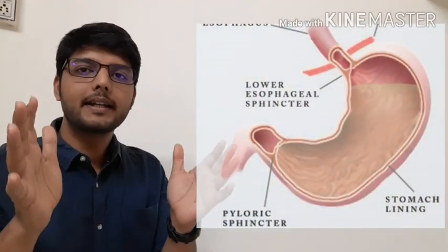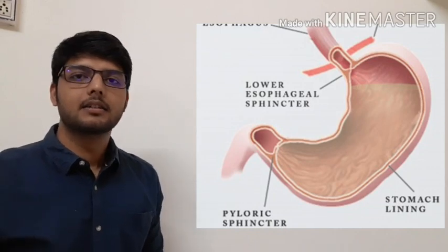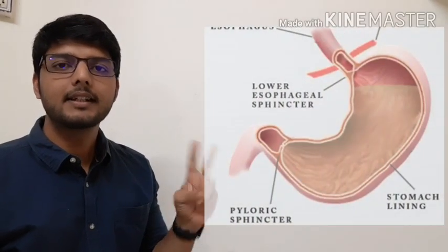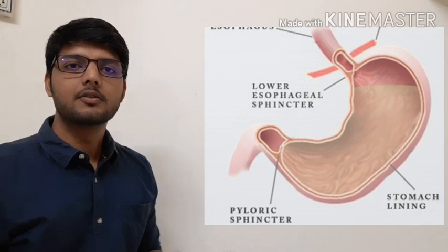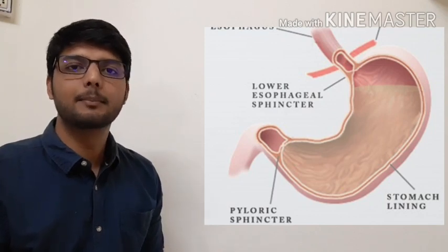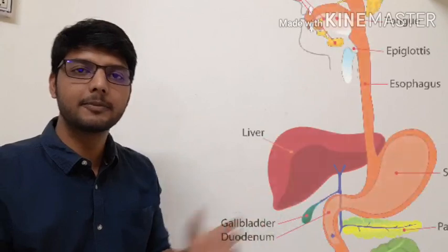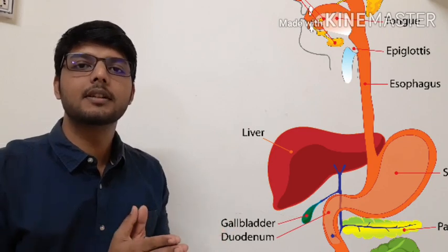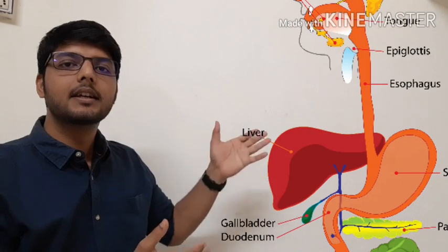Now this food comes to the stomach. The stomach is the widest part of the alimentary canal. In the stomach, the food will stay for at least three hours and will convert into a semi-solid paste. The inner lining of the stomach secretes mucus, hydrochloric acid, and digestive juice. The mucus protects the stomach wall from the hydrochloric acid. The hydrochloric acid kills bacteria present in the food. The digestive juice converts proteins present in the food into simpler substances.